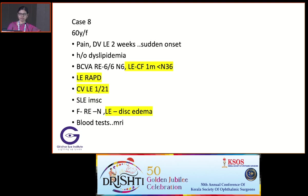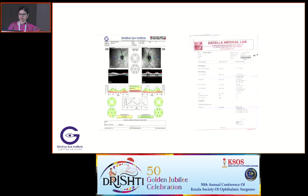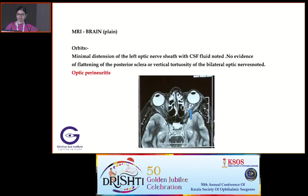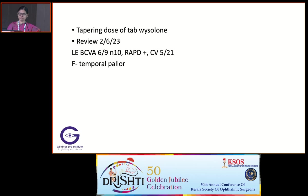A 60-year-old female with left-eye diminution of vision, two weeks duration, sudden onset, RAPD left eye, and color vision decreased — only disc edema. OCT was done, and MRI showed minimal thickening of the optic nerve sheath alone. So it's a case of optic perineuritis. A tapering dose of prednisolone was given and she improved.